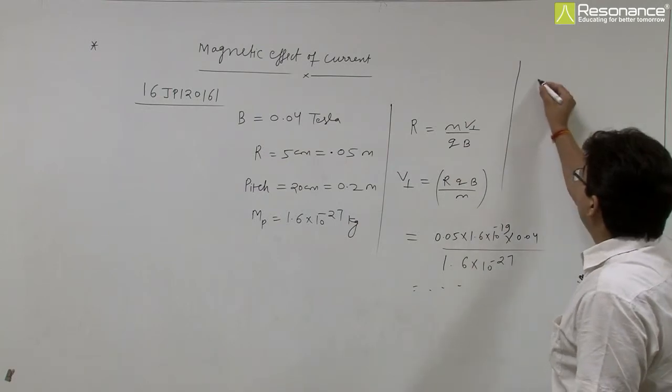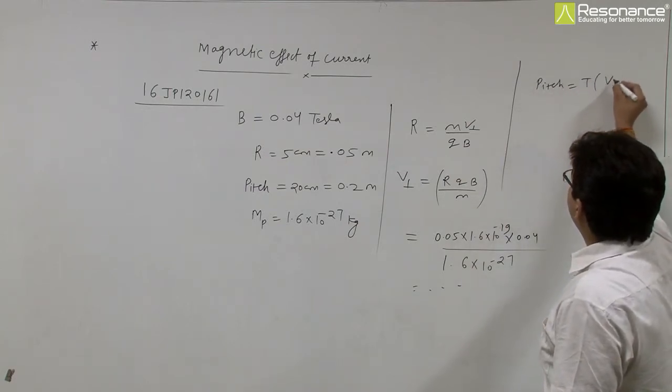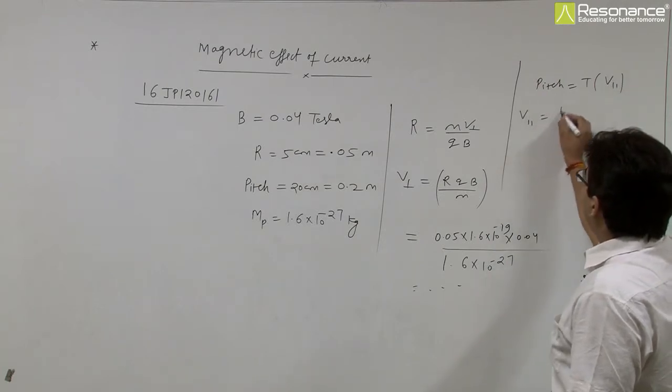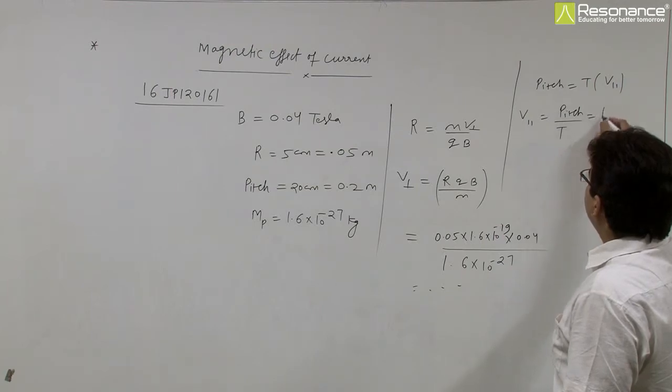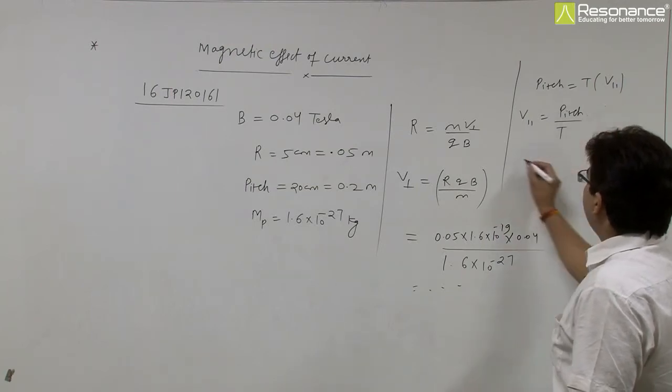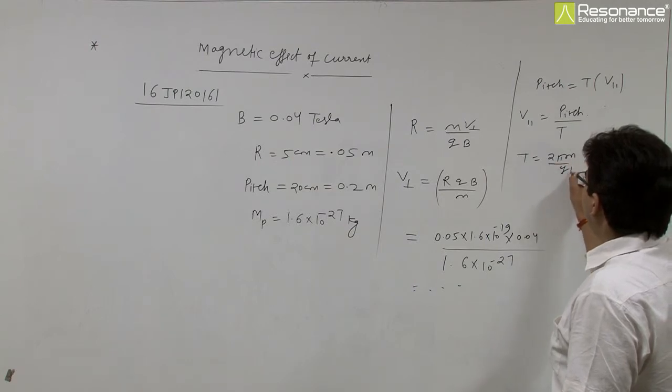And for v parallel, pitch of the particle is given and pitch equals to time period into v parallel. So v parallel equals to pitch upon time period, and time period we can find from this relation, 2 pi m by qB.